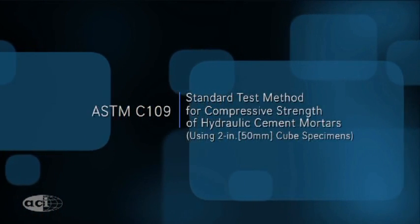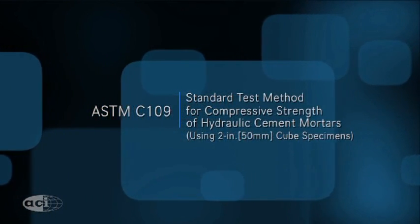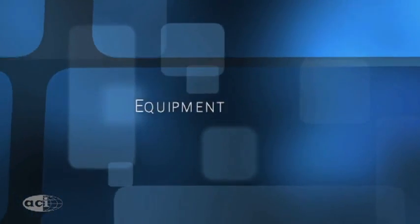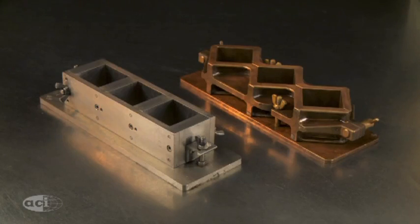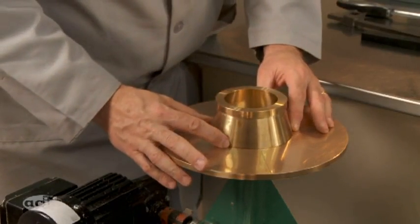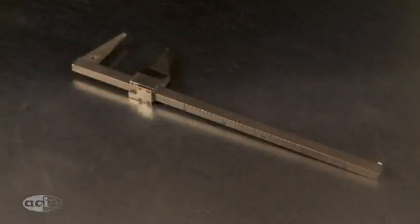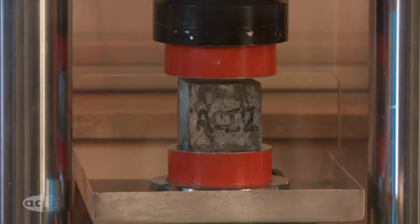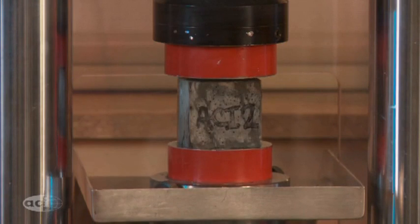ASTM C109, Compressive Strength, Equipment. 2-inch specimen molds made of a hard metal and meeting the dimensional requirements of Table 1 in ASTM C109, a flow table, flow mold, and caliper meeting the requirements of ASTM C230, a testing machine meeting the requirements of ASTM C109.